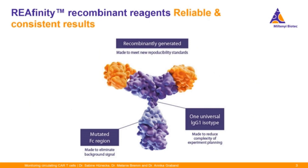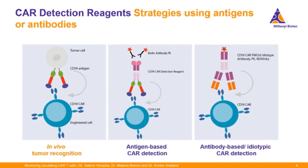To boost the reliability of our CAR detection reagents at Miltenyi Biotech, we have designed them with the benefits of our unique Reaffinity recombinant antibody technology. With the Reaffinity technology, we are in control of the genomic information behind our antibodies. We can select for the best performing clones and produce them with high purity, ensuring lot-to-lot consistency. The universal IgG1 isotype reduces complexity of experiment planning, and the engineered special FC backbone eliminates non-specific background staining.